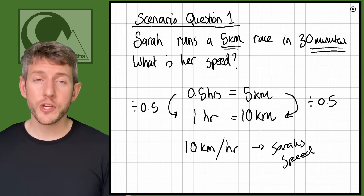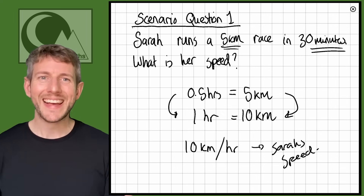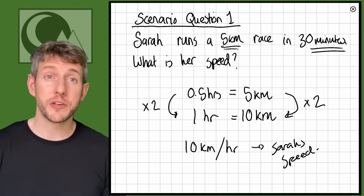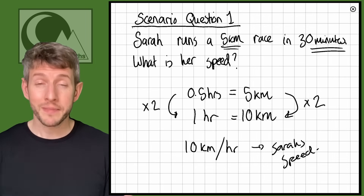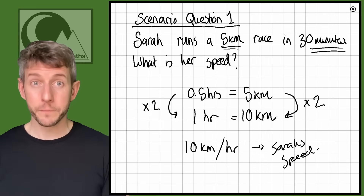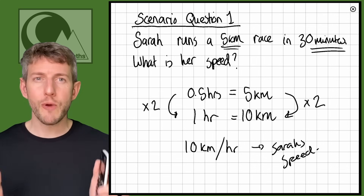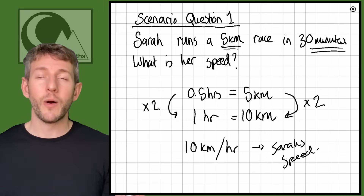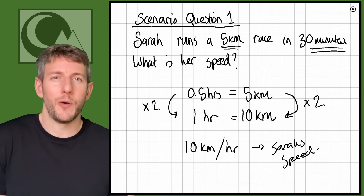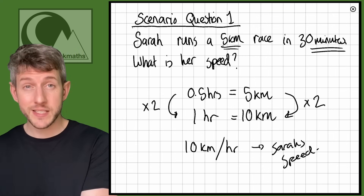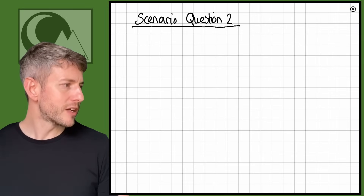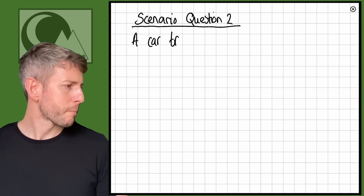You might have spotted the shortcut: if she did 5 kilometers in half an hour, in one hour she'd do 10 kilometers — her speed is 10 kilometers per hour. The key thing with speed-distance-time is not getting too wrapped up in any formula, but thinking about what the speeds mean: kilometers per hour, miles per hour, meters per second — how many of the distance measurement you do in one of the time measurement.